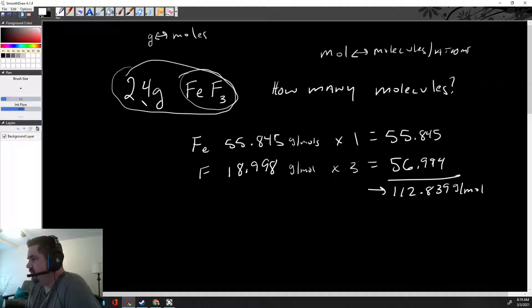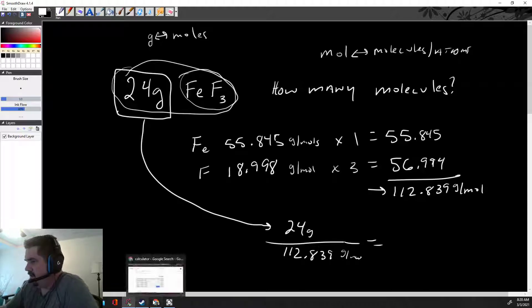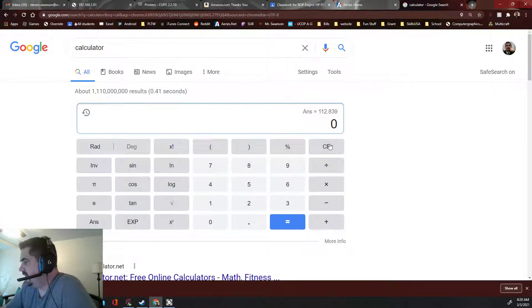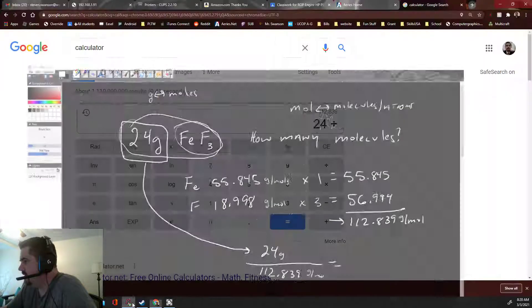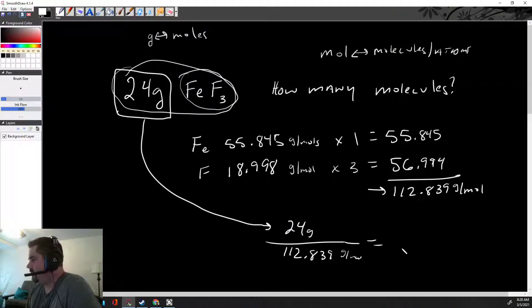So this is how many grams of this stuff you will find per mole. So we now know that this iron fluoride is this many grams per mole. But I only have 24 grams, so I'm not going to even have one mole of it. That's fine. Let's see how much we'll have. Take the amount of mass you do have, 24 grams, and divide it by the 112.839 grams per mole. And it's 0.213 moles of iron fluoride.